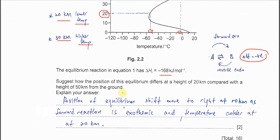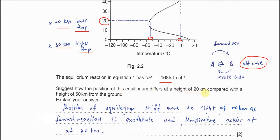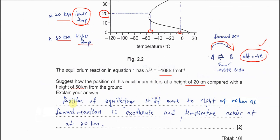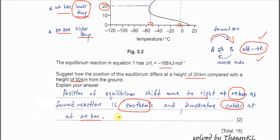Suggest how the position of this equilibrium differs at the height of 20 km compared to 50 km. We know that 20 km is lower temperature, so the equilibrium tries to increase the temperature, that's why it will shift to right. Lower temperature shifts to right because it tries to release more energy to increase the temperature. Therefore, what you need to explain is where it's going to shift. Equilibrium will shift more to right at 20 km as the forward reaction is exothermic, and because the temperature is colder at 20 km, that's why it shifts.